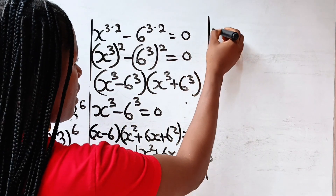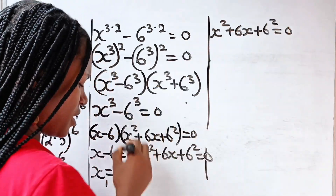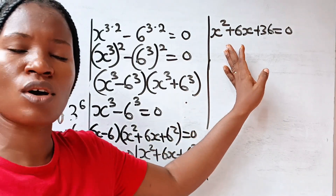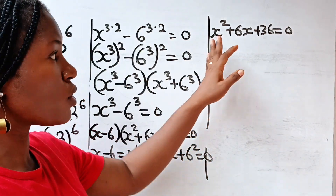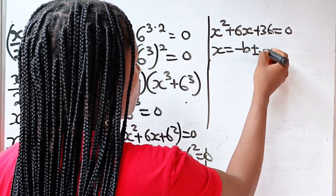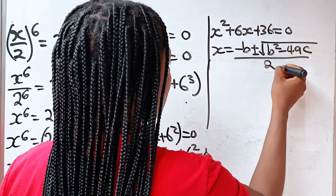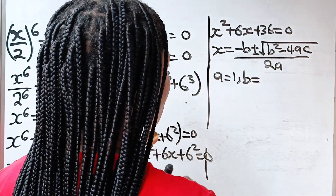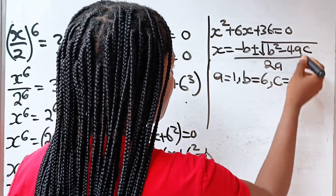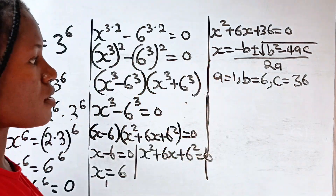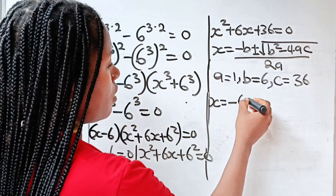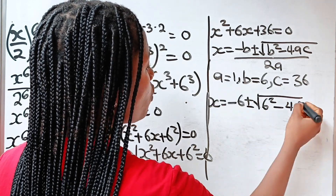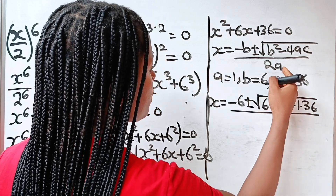For x squared plus 6x plus 36 equals 0, we solve using the quadratic formula: x equals minus b plus or minus square root of b squared minus 4ac, all divided by 2a. Here a equals 1, b equals 6, and c equals 36. So x equals minus 6 plus or minus square root of 6 squared minus 4 times 1 times 36, everything divided by 2 times 1.